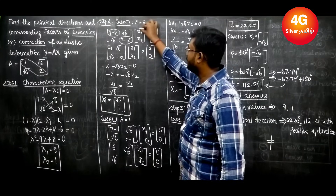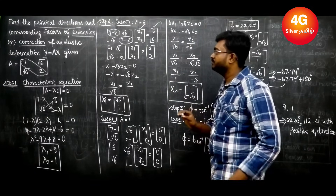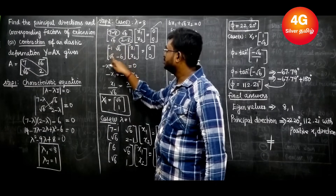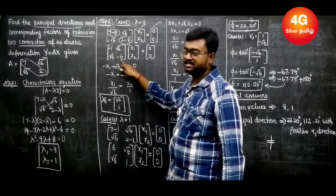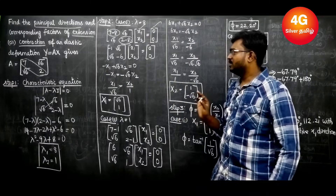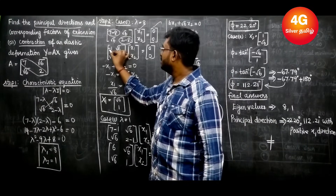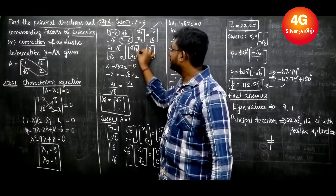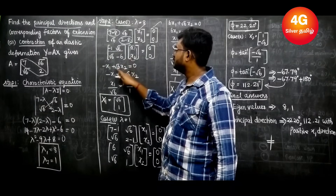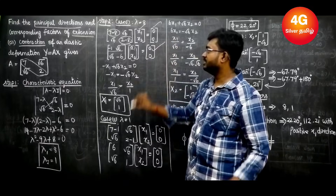So we have the system [−1, √6; √6, −6][x1; x2] = [0; 0]. This format is common to all eigenvector problems. Taking one equation: −x1 + √6·x2 = 0.